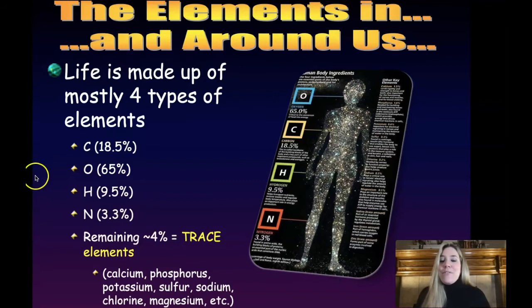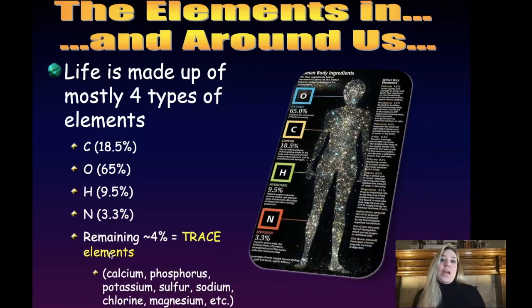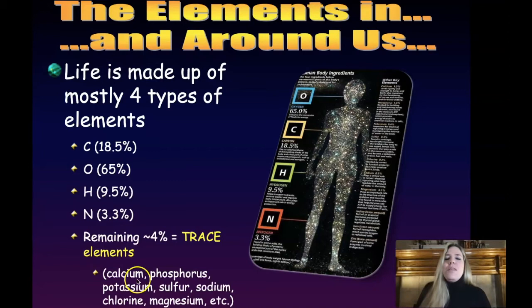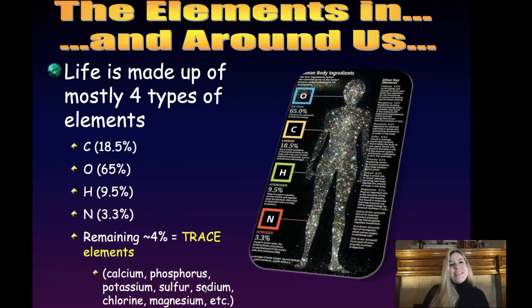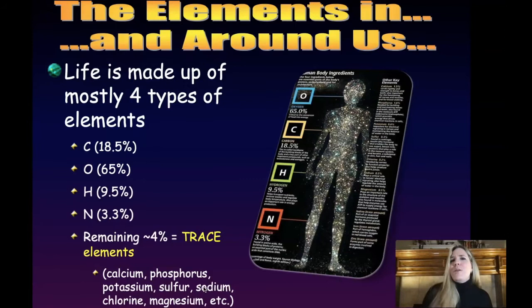The remaining 4% are what we call trace elements. These may come in very small quantities, but they are vital to survival. As you go through your life science studies, you'll find that some of these elements serve as cofactors or ions important for life's processes. These include calcium, potassium, sodium and chlorine — very important for getting signals across neurons — magnesium, and others. Despite the millions of species on earth and the complexity of a human being, it's very few elements of the periodic table that make us up.